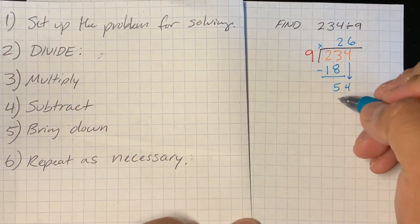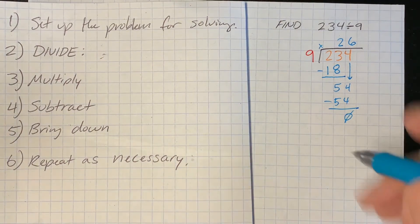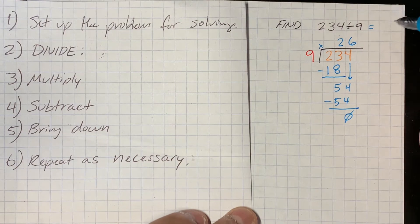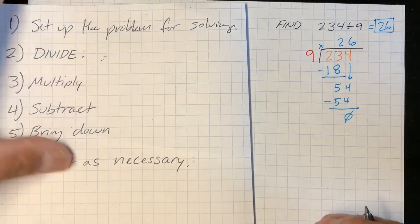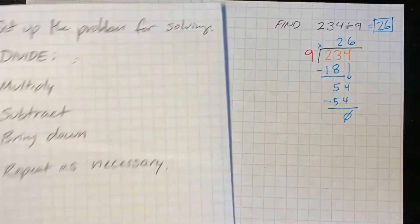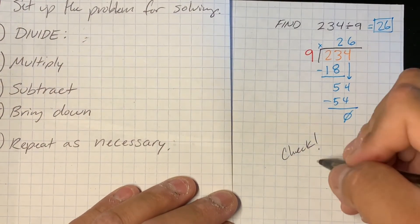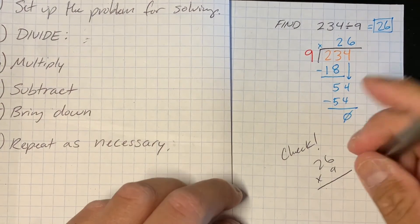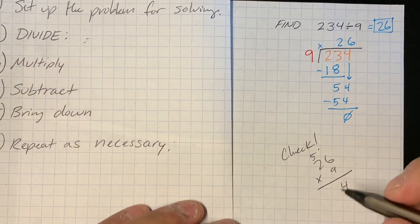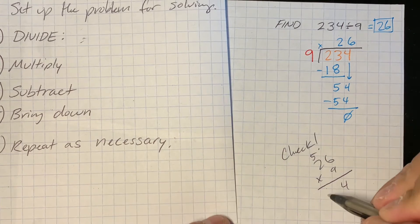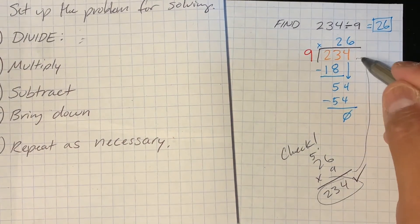How many times can 9 go into 54? Six times. 9 times 6 is 54 with no remainder. So 234 divided by 9 equals the quotient 26. Box your final answer. Then check: 26 times 9 — 9 times 6 is 54, 9 times 2 is 18, plus 5 is 23 — giving 234. The product matches the dividend, so it checks out.